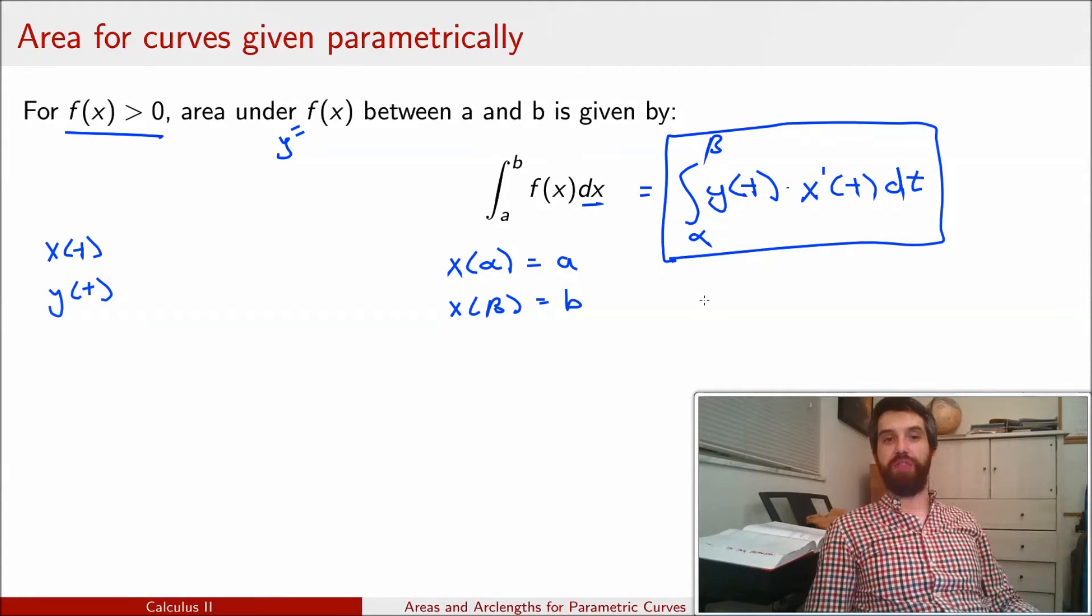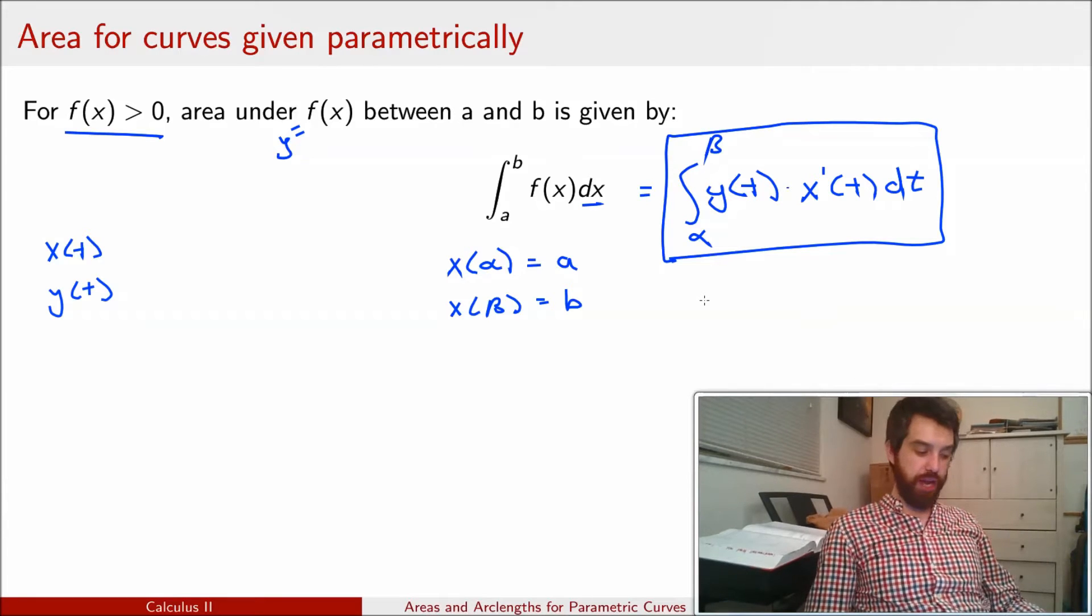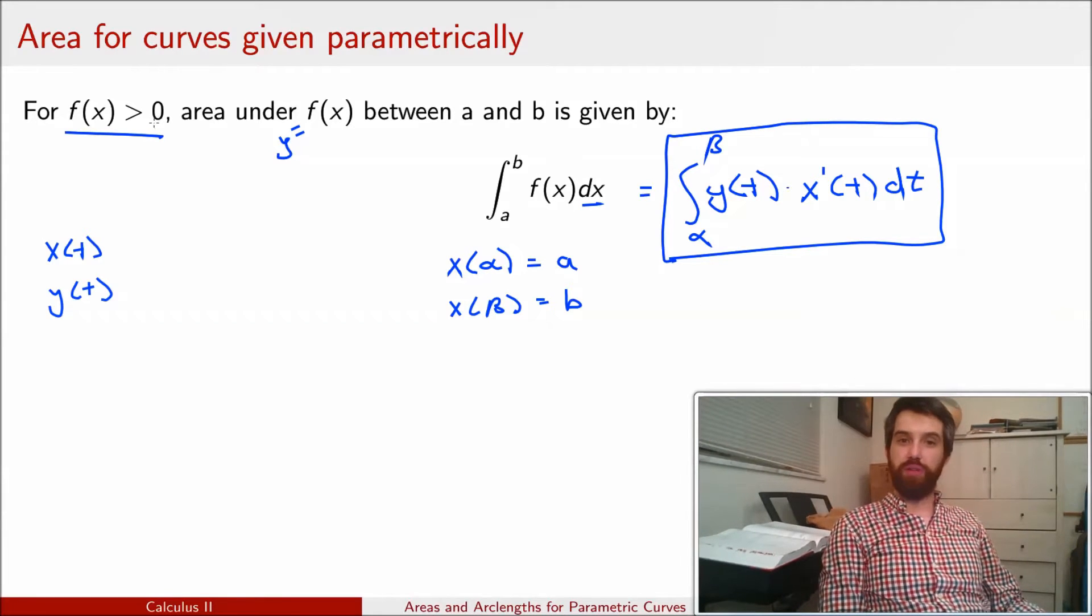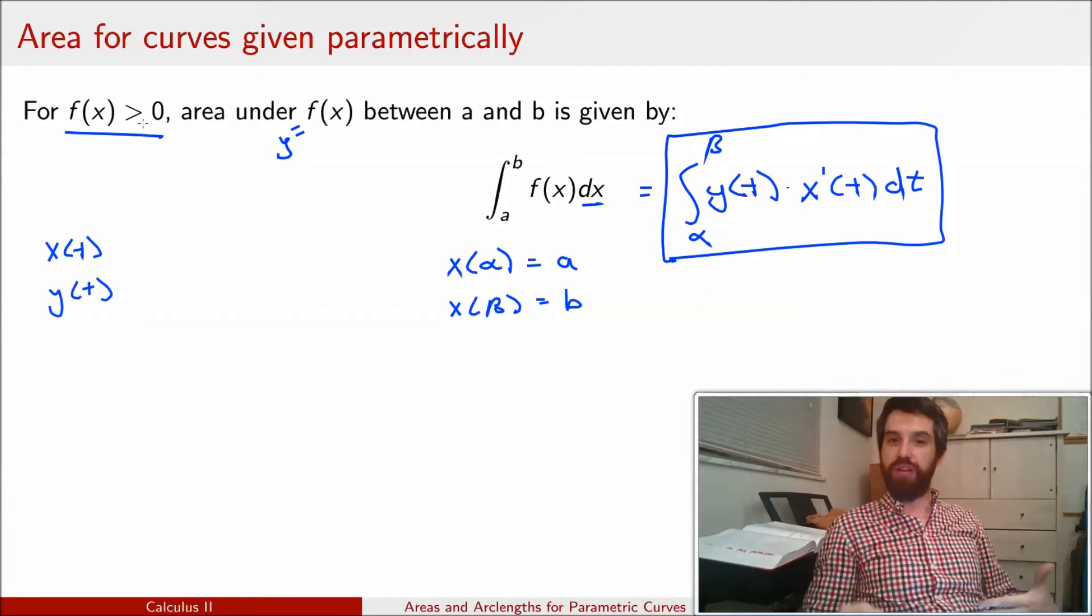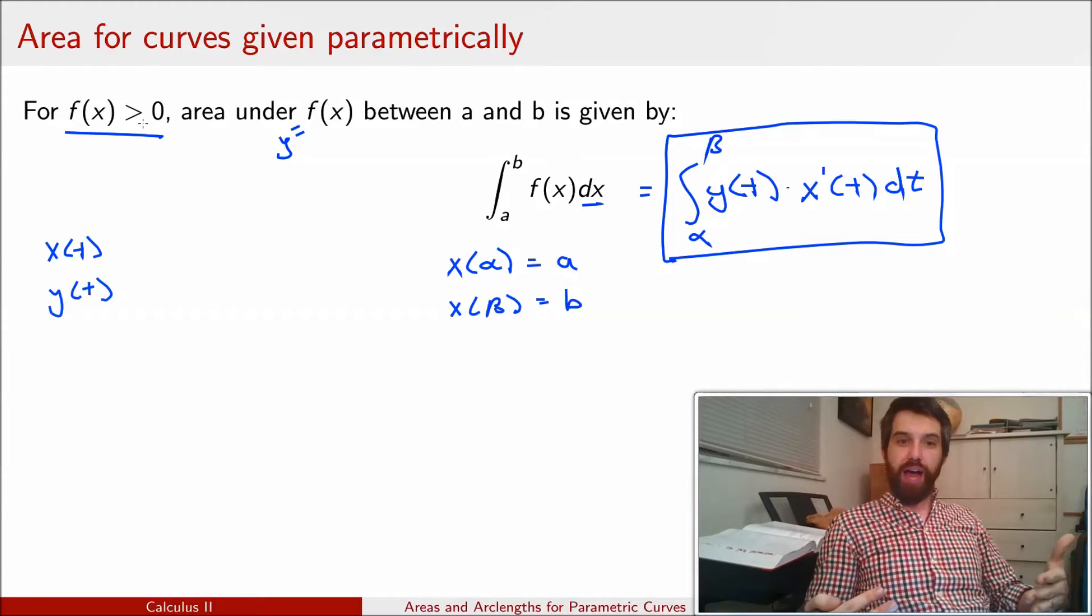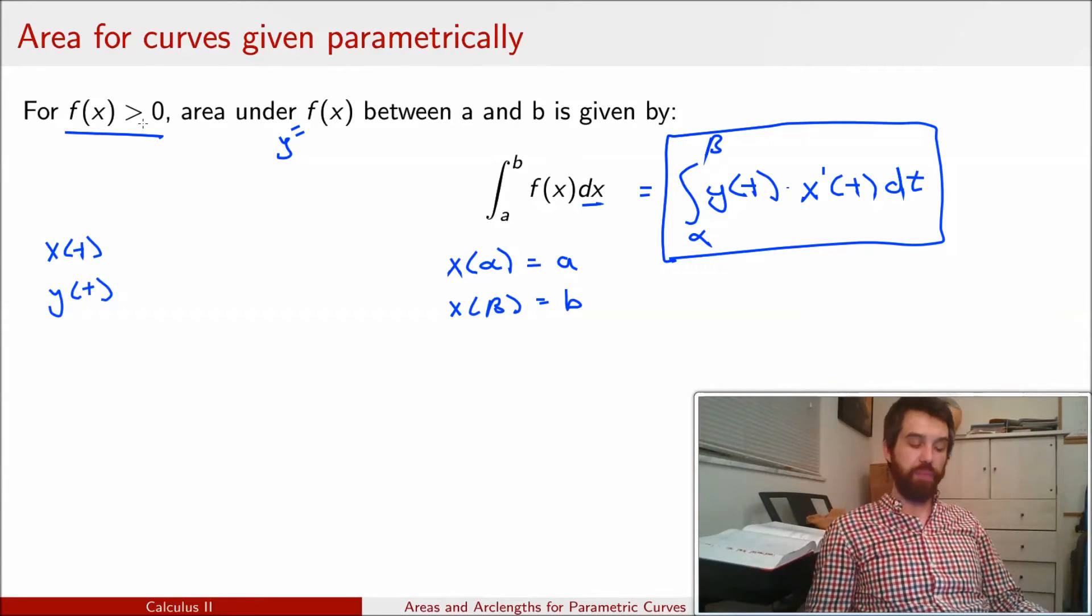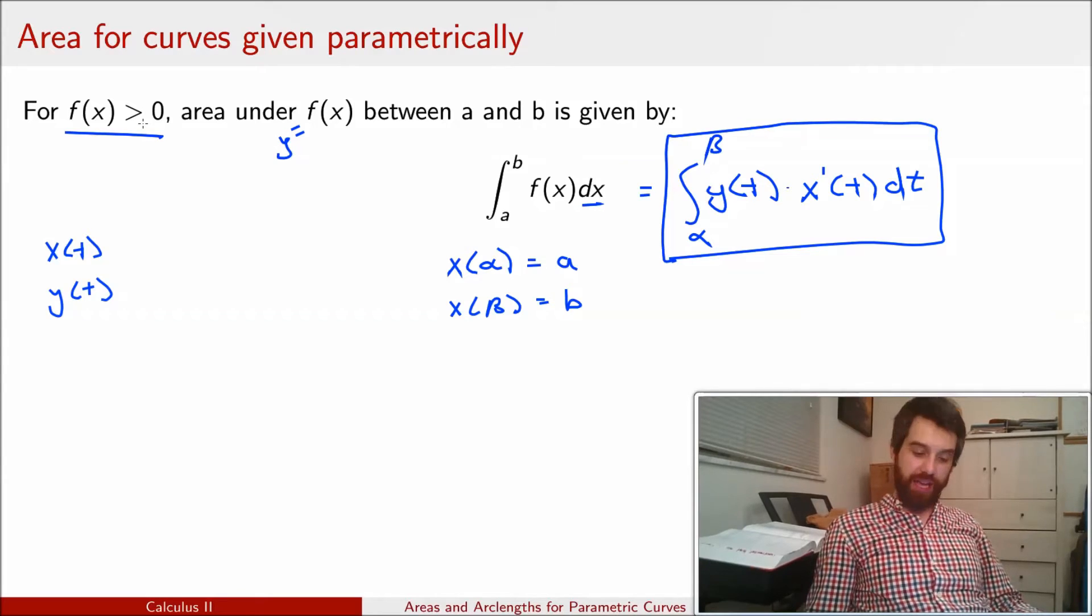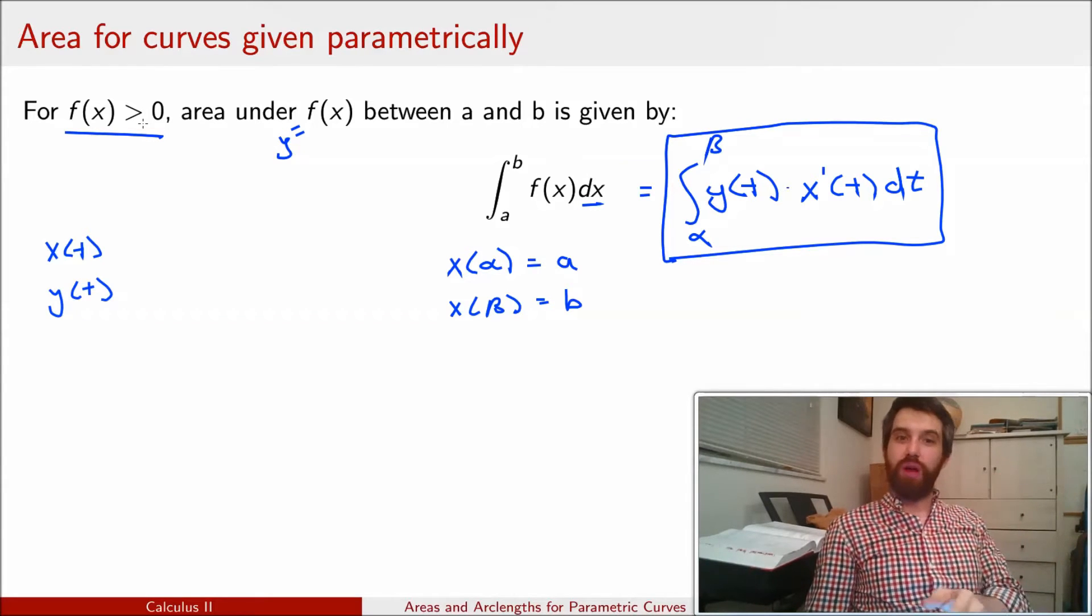So we have shown a somewhat loose derivation of this particular formula, the area under the curve when it's described parametrically. And I want to note one thing here. We have the same condition, f(x) needs to be greater than zero. If I want to talk about an area underneath the curve, between the x axis and the curve, I need to have my assumption being that in this case, my y values are going to be all positive in this region.